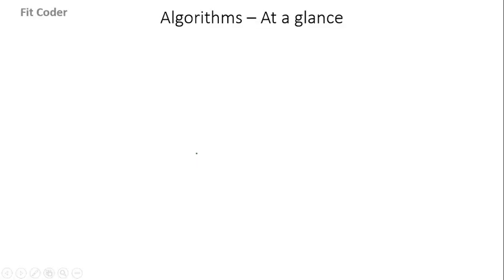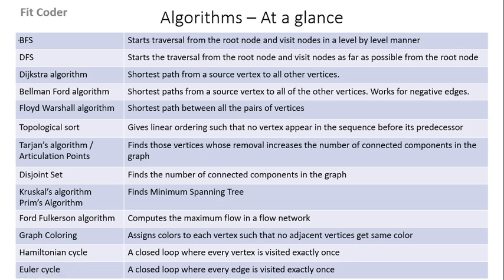In my previous videos we discussed the following algorithms: two traversal techniques BFS and DFS, then three shortest path algorithms — Dijkstra, Bellman-Ford and Floyd-Warshall, then topological sort, then an algorithm to find the cut vertices or articulation points, then the disjoint set or union find algorithm, then two algorithms for minimum spanning tree which were Kruskal and Prim's, then the Ford-Fulkerson algorithm to compute maximum flow, the graph coloring algorithm to check if the graph is bipartite, the Hamiltonian cycle which visits every vertex once, and the Euler cycle which visits every edge exactly once.